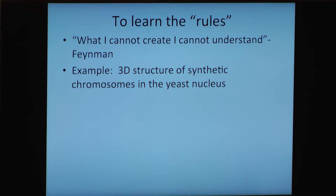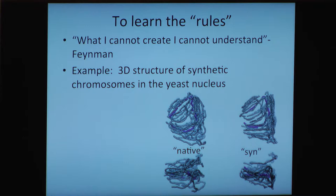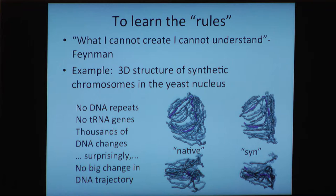An example of something we learned by doing this is the three-dimensional structure of synthetic chromosomes in the nucleus of a yeast cell. On the right you see maps of chromosomes taking trajectories through the nucleus — this is done using a technique called Hi-C. This is the fifth chromosome synthesized at Tianjin University. This is the native version, and this is what happens when we make a synthetic version with thousands of changes to the DNA sequence. We've removed all the repetitive DNA and all the tRNA genes, and yet there's only a minimal impact on the trajectory of the DNA through the genome and the overall structure.